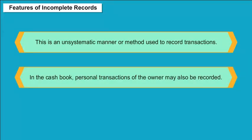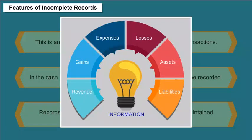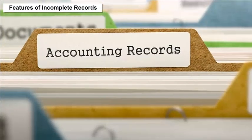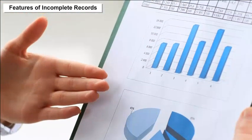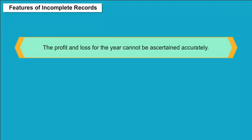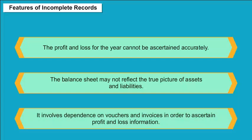Features of incomplete records: It is an unsystematic manner used to record transactions. In the cash book, personal transactions of the owner may also be recorded. Records of cash transactions and personal accounts are maintained systematically; however, no proper information is available regarding revenue, gains, expenses, losses, assets, and liabilities. Firms maintain records as per their convenience, so there is no uniformity and the information is not comparable. The profit and loss for the year cannot be ascertained accurately, and the balance sheet may not reflect the true picture of assets and liabilities.